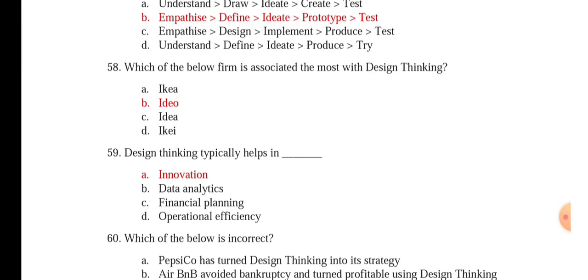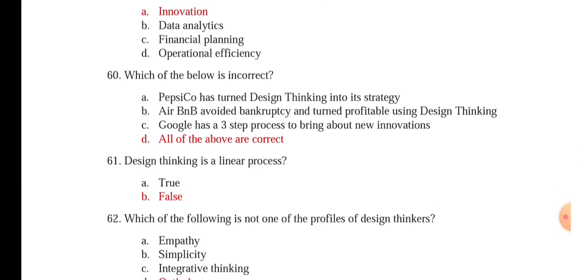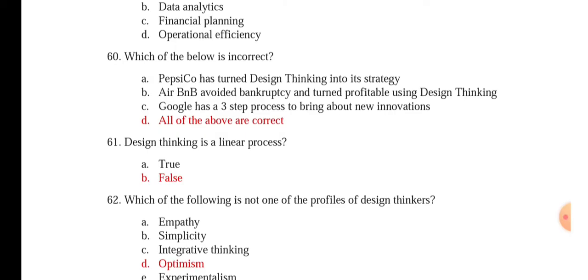Which of the below firm is associated the most with design thinking? IDEO. Design thinking typically helps in innovation. Which of the below is incorrect? PepsiCo has turned design thinking into its strategy. Airbnb avoided bankrupt and turned profitable using design thinking. Google has a three step process to bring about new innovations. So all of them were correct.